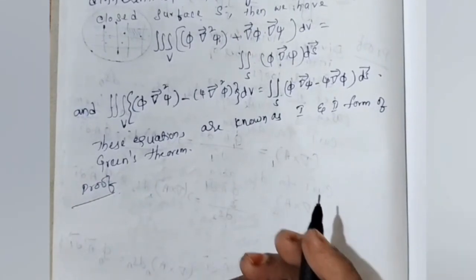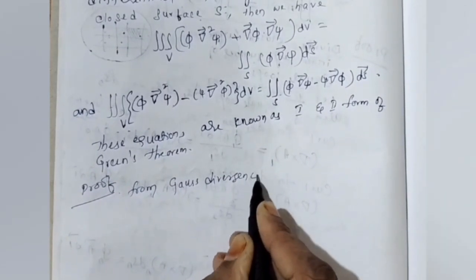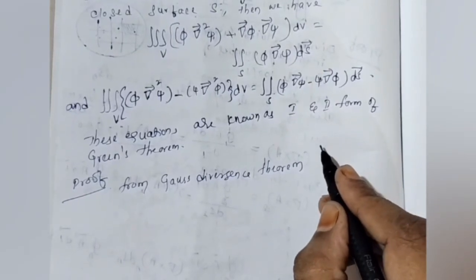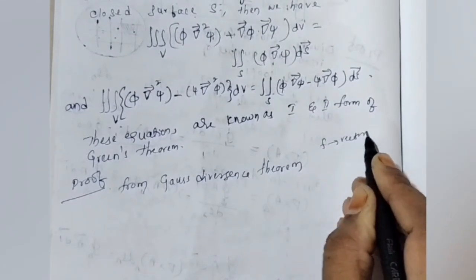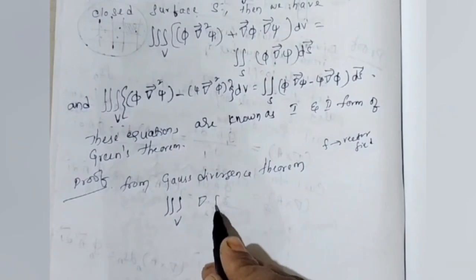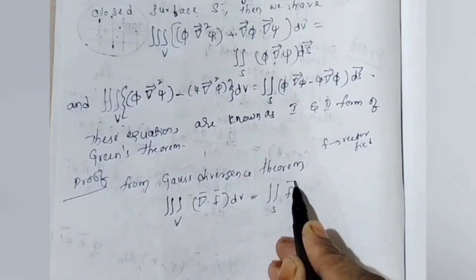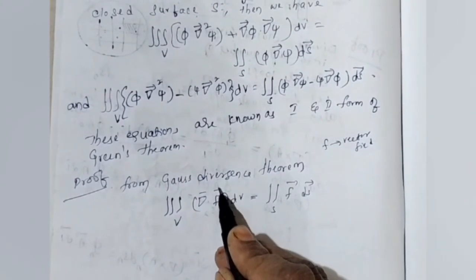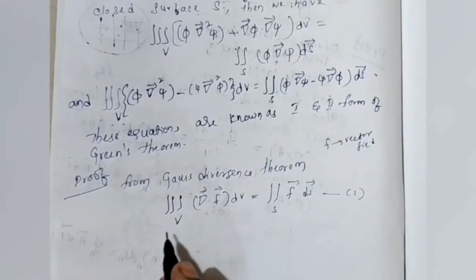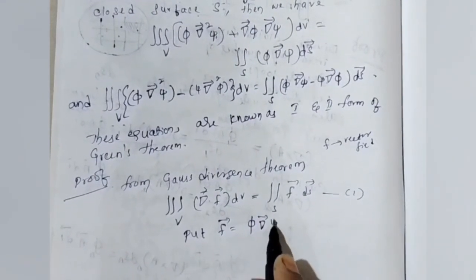Let us go for the proof. From Gauss divergence theorem: if F is the vector field, then volume integral of del dot F dV equals surface integral of F dot dS. Let us put this as equation 1. Now, put F equal to π del ψ.